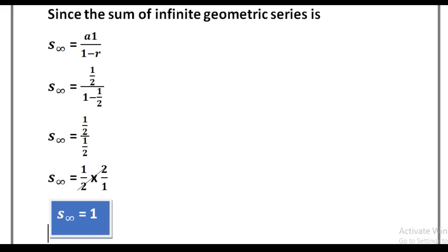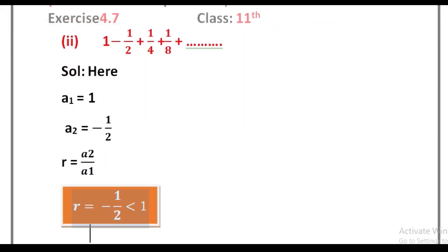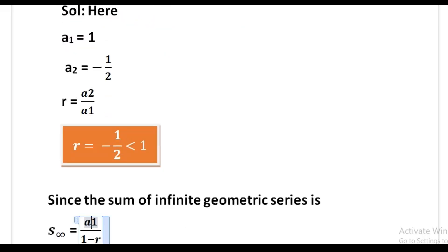Next, part number 2: 1 minus 1 divided by 2 plus 1 divided by 4 minus 1 divided by 8 plus up to so on. Here the first term a1 is equal to 1, the second term a2 is equal to minus 1 divided by 2. r is the common ratio between a2 and a1, so r is equal to minus 1 divided by 2, which is less than 1.